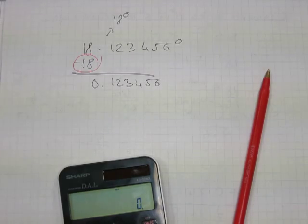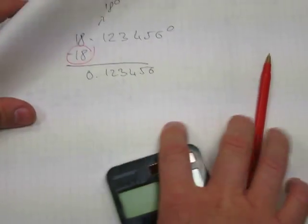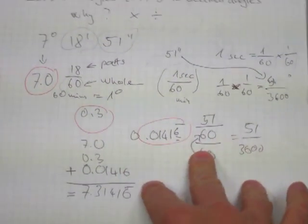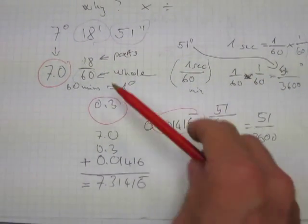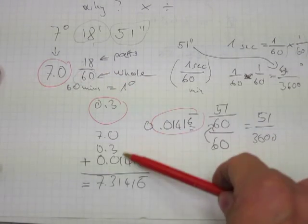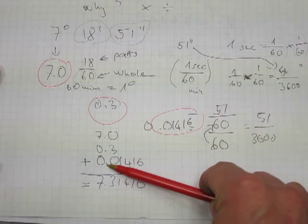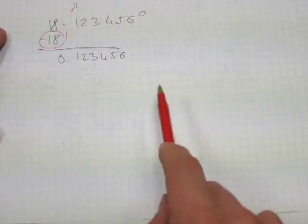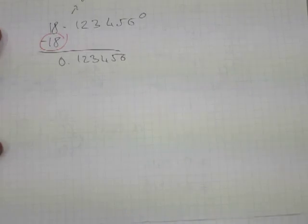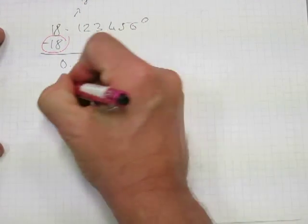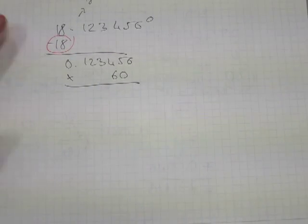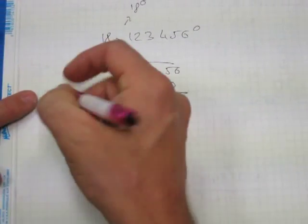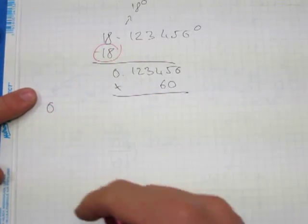Now this decimal number, 0.123456, what part of a minute does this represent? Well, we have to go backwards. If in this conversion we had to do a division here and then an addition, then we're gonna have to do a subtraction and a multiplication. Let's multiply this by 60.